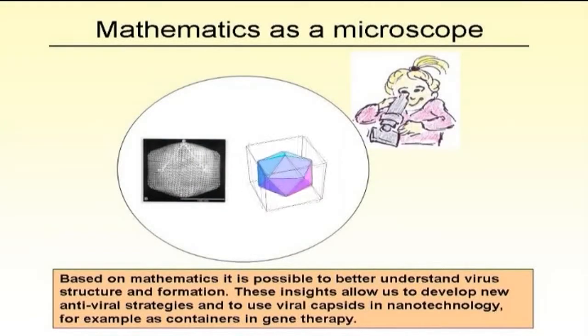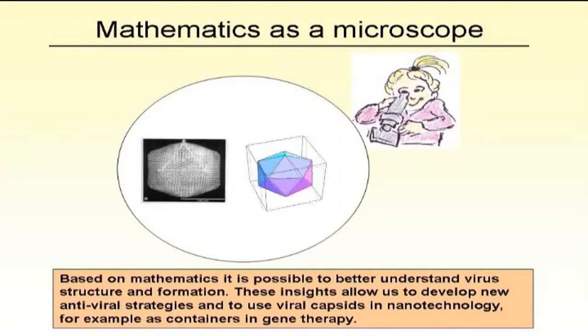We are here to look at viruses with a mathematician's eye — with a mathematical microscope. We want to abstract from the shape and understand the principles of formation of these objects. By doing so, we are in a powerful position not only to understand how viruses come together, but also to use similar structures in nanotechnology — for instance in gene therapy, creating these containers to transport cargo.